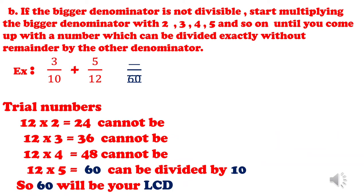Letter B: if the bigger denominator is not divisible by the other, start multiplying the bigger denominator by 2, 3, 4, 5, and so on, until you come up with a number that can be divided exactly without remainder by the other denominator. We will apply that to this example: 3 over 10 plus 5 over 12. The denominators are 10 and 12. The bigger denominator is 12, but 12 cannot be divided by 10.